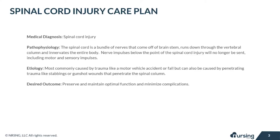The spinal cord is a bundle of nerves that come off of the brainstem. They run down through the vertebral column and then innervate the entire body. When there is an injury to the spinal cord, nerve impulses below the point of injury will no longer be sent — and this includes both motor and sensory impulses.